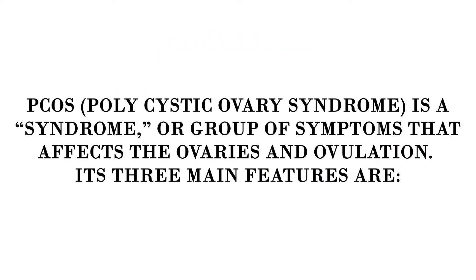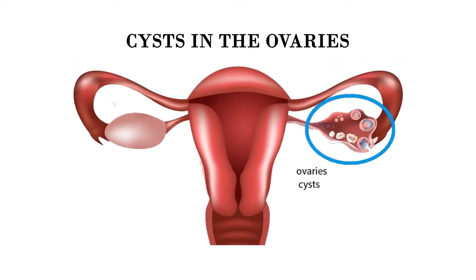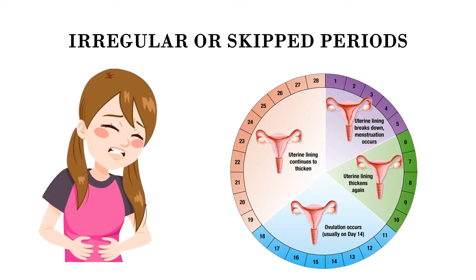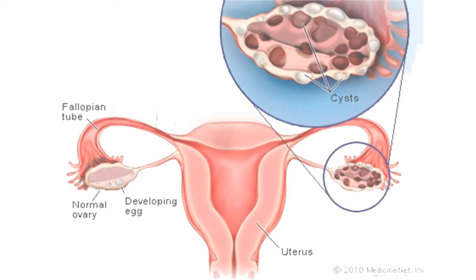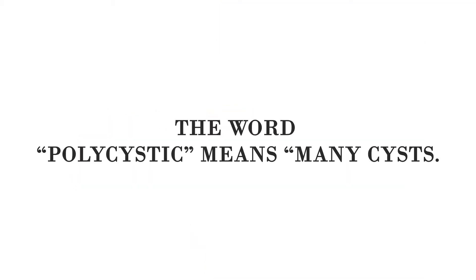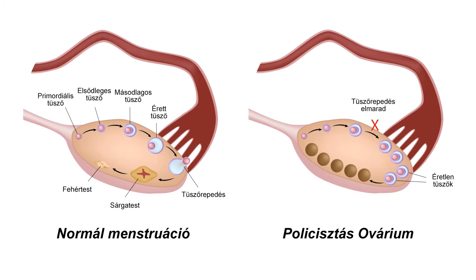PCOS, or polycystic ovary syndrome, is a syndrome or group of symptoms that affects the ovaries and ovulation. Its three main features are cysts in the ovaries, high levels of male hormones, and irregular or skipped periods. In PCOS, many small fluid-filled sacs grow inside the ovaries. The word polycystic means many cysts.